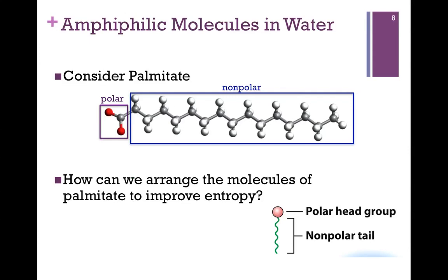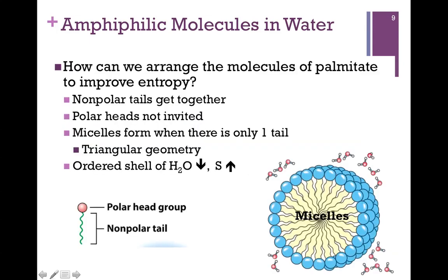The question, then, is how do these lipid molecules associate in water, and it depends on the geometry of the lipid. Let's look at the simple case of a fatty acid like palmitate. You have a polar head group and a single non-polar tail. If you look at the cartoon at the bottom of the screen, you can see it's kind of triangular in shape — a wide polar head group and a narrow tail.